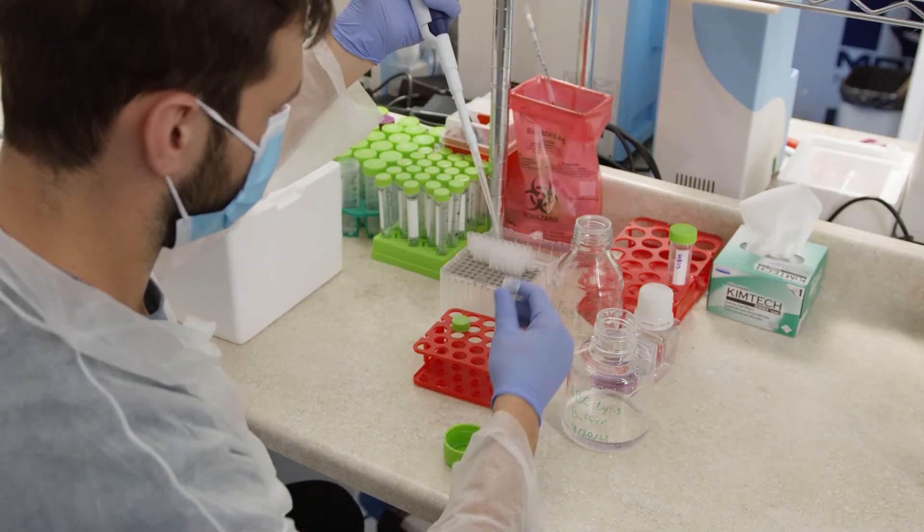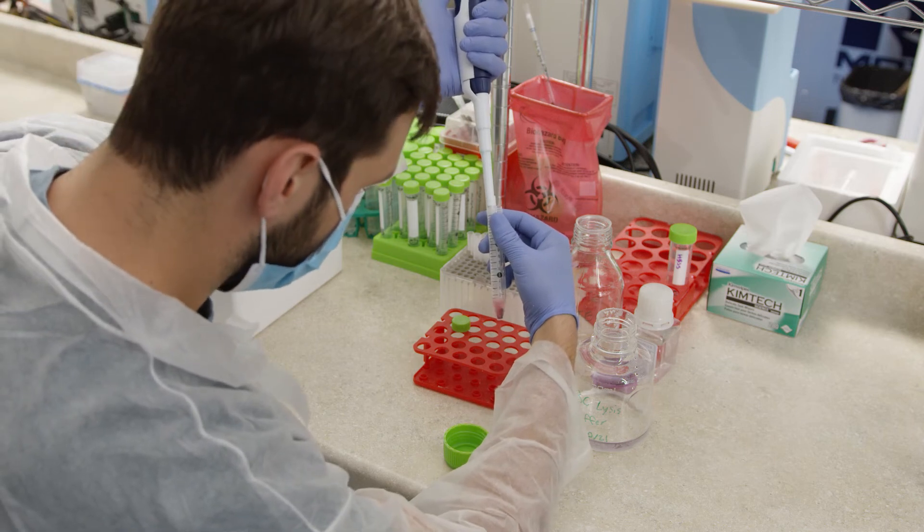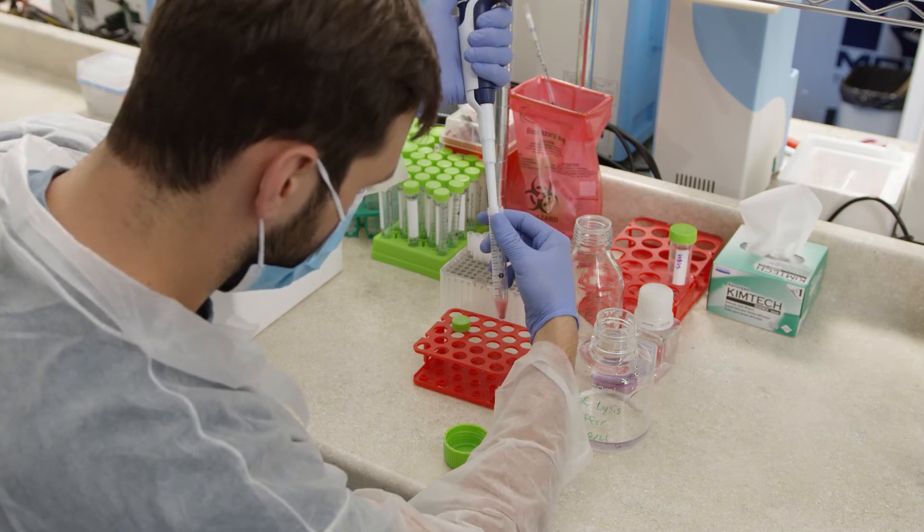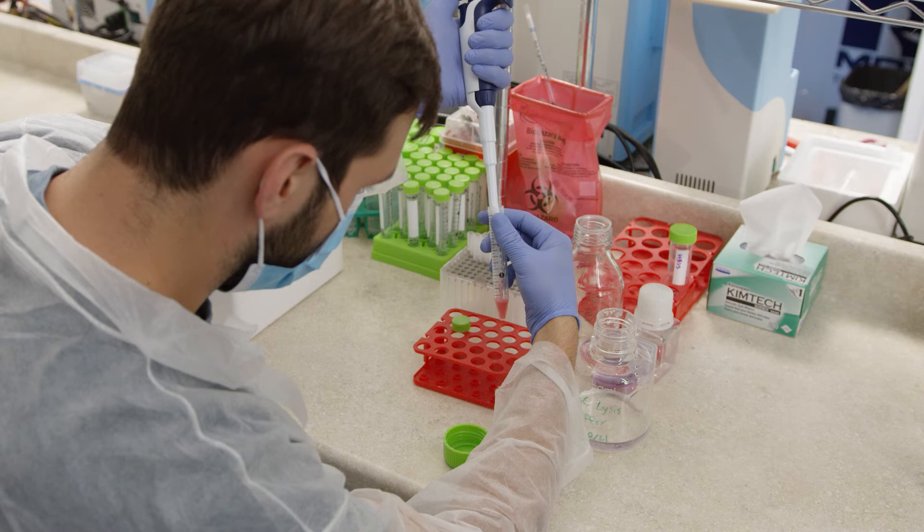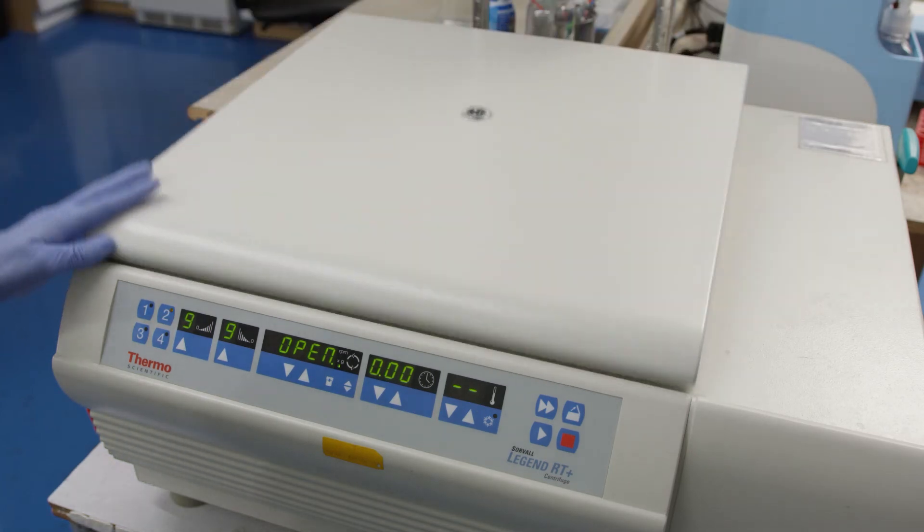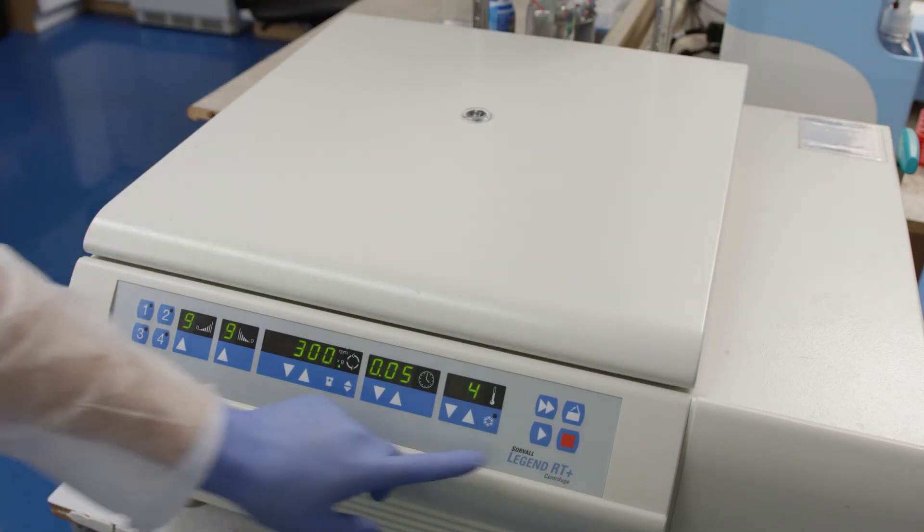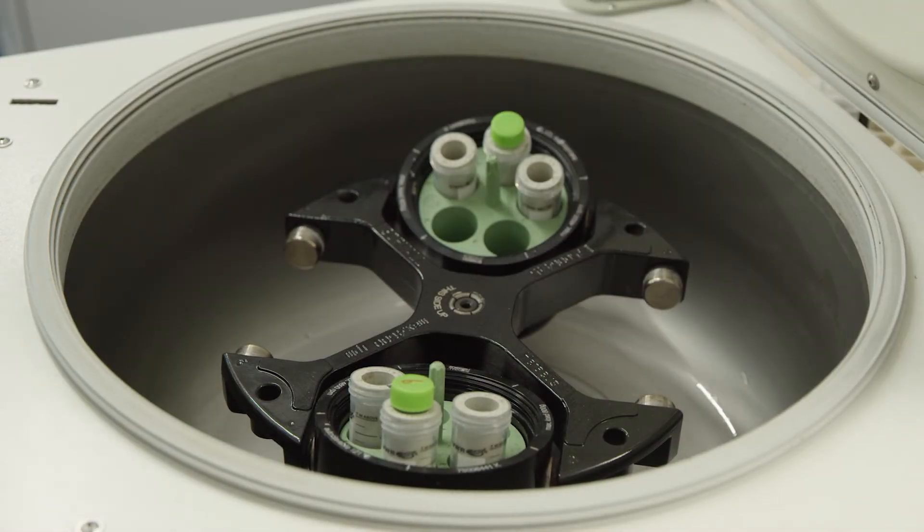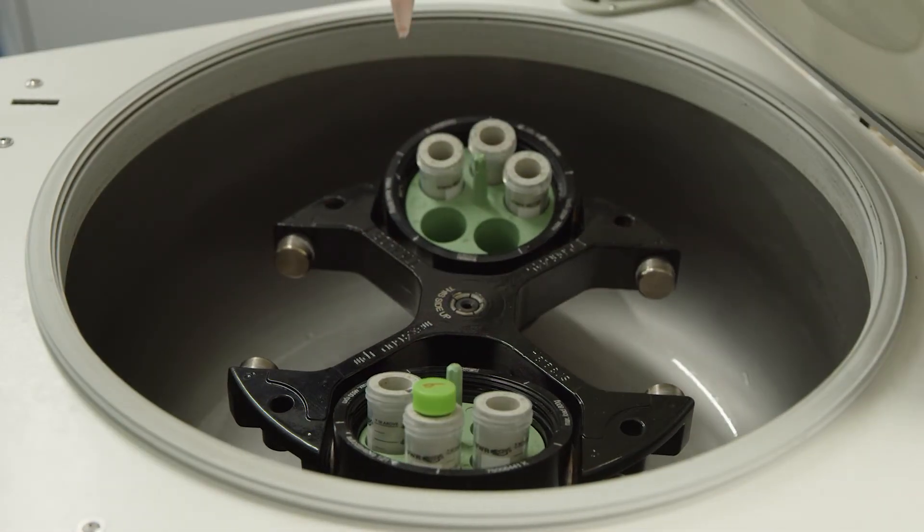Add 1 milliliter of RBC lysis buffer and incubate for 1 to 7 minutes depending on your tissue type. Refer to the Singulator user manual for recommendations. Centrifuge the sample at 300g for 5 minutes. Remove the supernatant and re-suspend the pellet in the appropriate buffer or media for your cells.